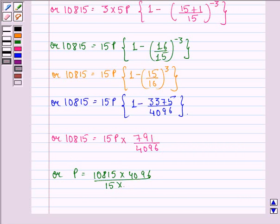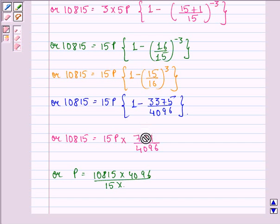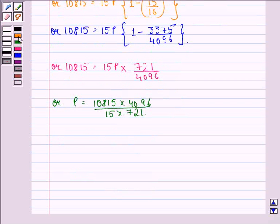Now here we see that we have 721 in the numerator. So here we have 15 into 721, this equals 721 multiplied by 4,096 divided by 721 because 10,815 divided by 15 is 721. Now this gets cancelled with this and we have 4,096.